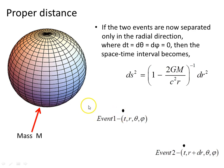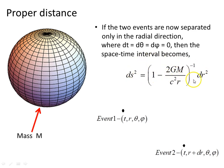Now let's consider proper distance. Here's our mass, the source of Schwarzschild spacetime, some mass m, and we have two events that are separated only in the radial direction. So dt, dθ, dφ are all zero, and the spacetime interval becomes just the radial part. Event one has coordinates t, r, theta, phi, and event two is t, r plus dr, theta and phi. These two events have the same time coordinate, the same polar angle, the same azimuthal angle — they just differ in the radial direction.